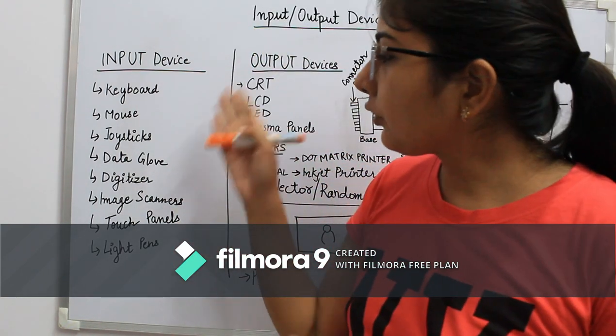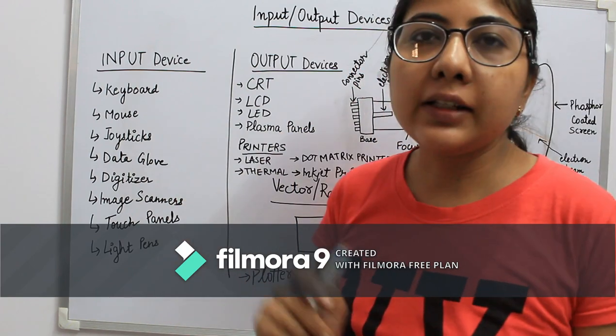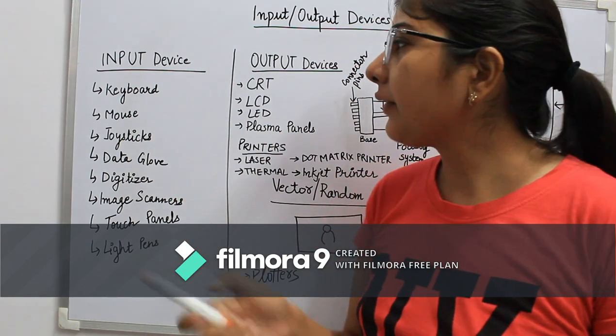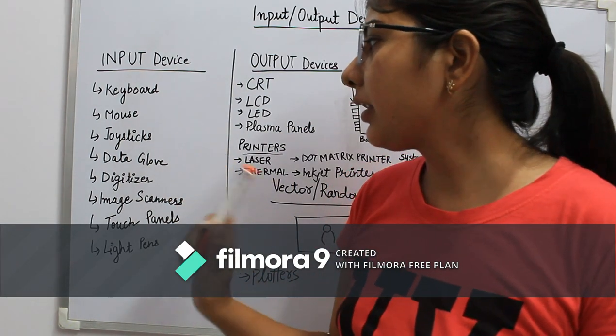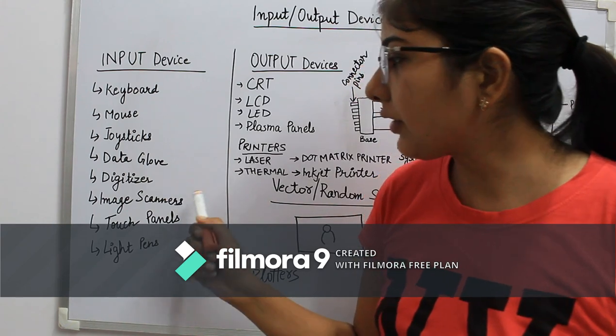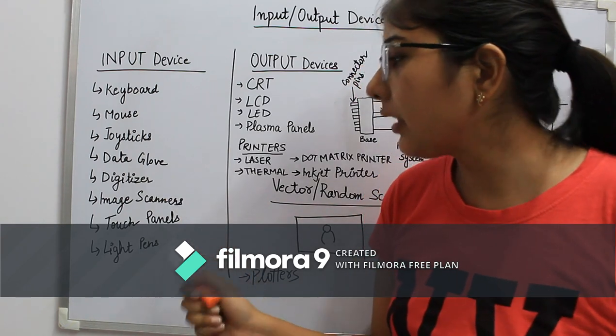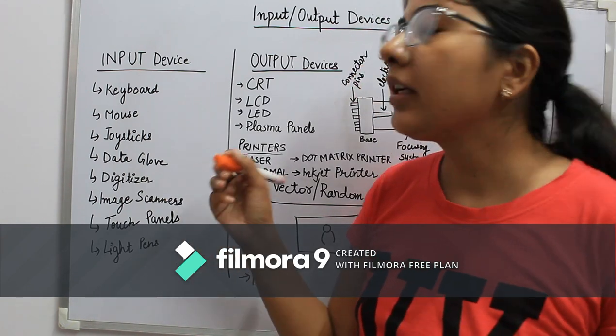There are so many input devices in computer graphics, such as keyboard, mouse, joysticks, data glove, digitizer, image camera, touch panel, and light pens.